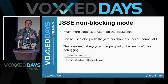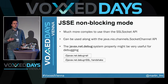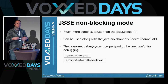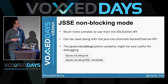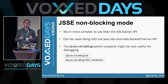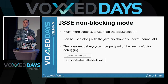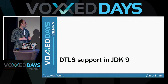Since SSLEngine is a complex API to debug, you can enable properties to inspect what happens during the TLS handshake or communication. The property javax.net.debug, when set to 'all', shows all information flowing between the client and server. You can make this more fine-grained by specifying just 'handshake' to see only messages exchanged during the TLS handshake, or 'ssl' to see only messages exchanged after TLS is established.